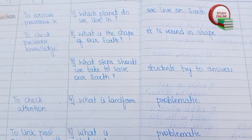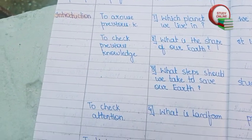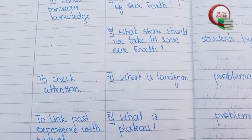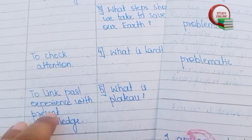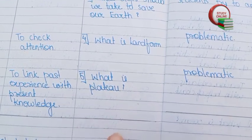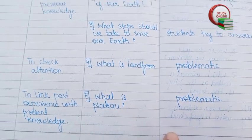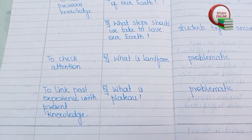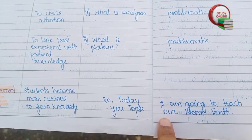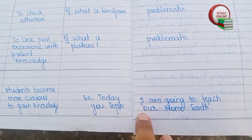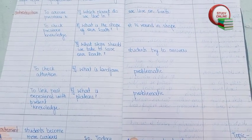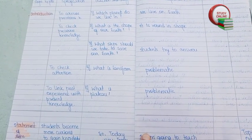Here you can see the list of expected answers from students. The objectives for the introduction are: to arouse previous knowledge, to check previous knowledge, to check attention, and to link past experience with present knowledge. After asking questions and getting answers, we give the statement of aim — we say 'Today I am going to teach you the topic of Our Home Earth.'